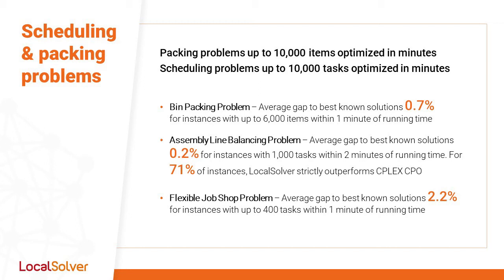On the flexible job shop problem, the average gap to the best-known solution is 2.2% for instances with up to 400 tasks within 1 minute of running time.